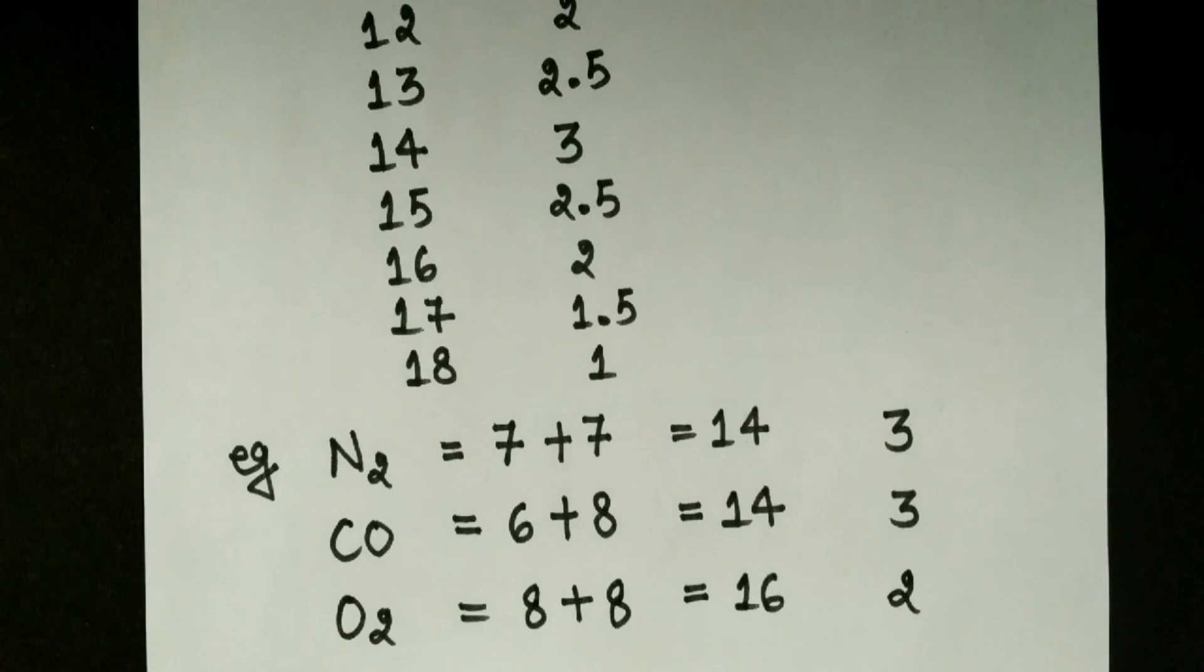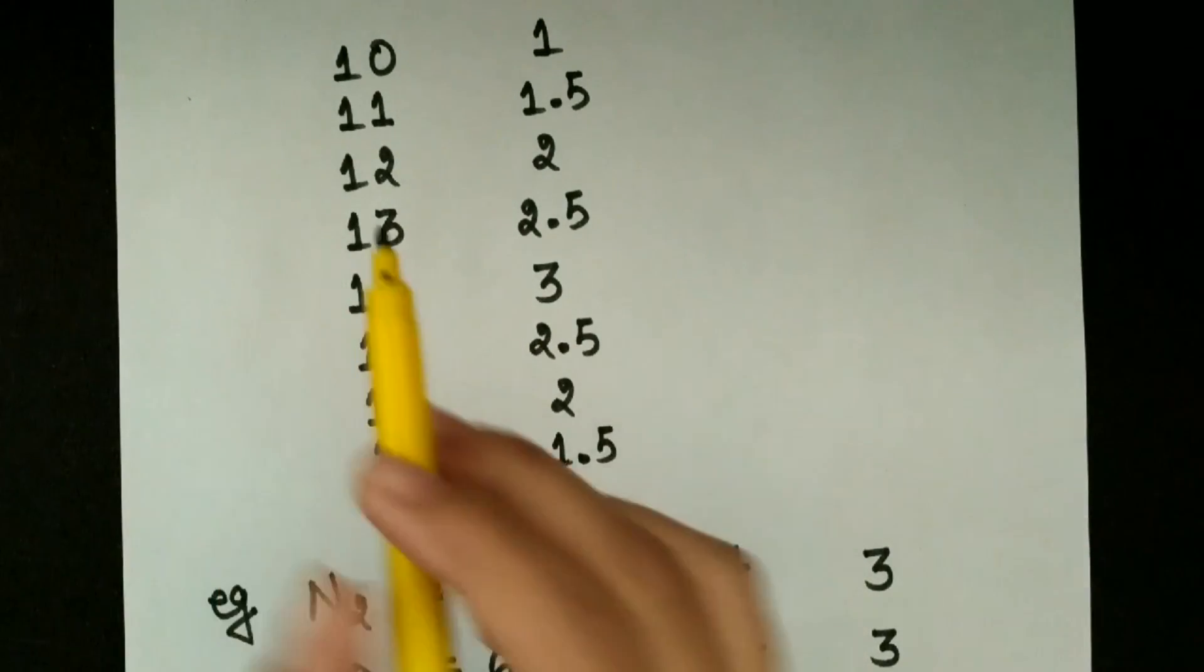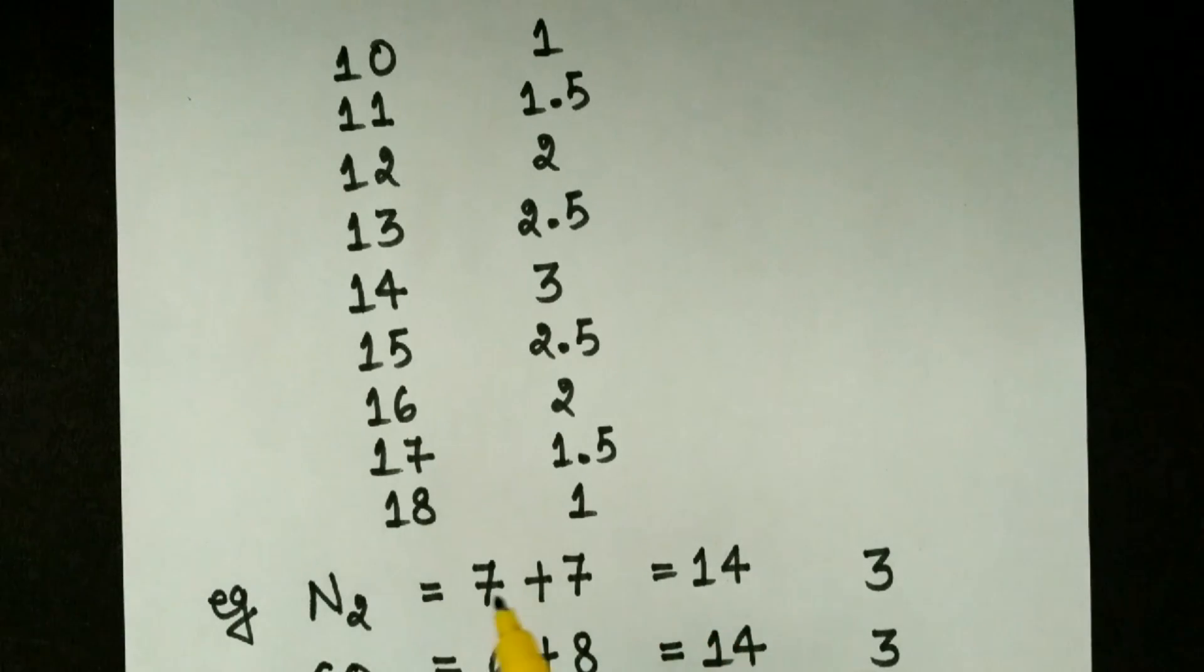So by this trick we can find many bond orders for molecules with electrons from 10 to 18. Thank you for watching my video and please subscribe to my channel.